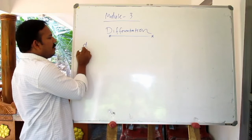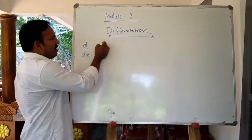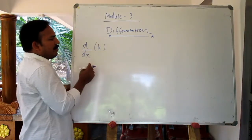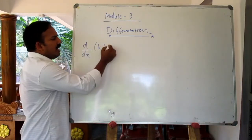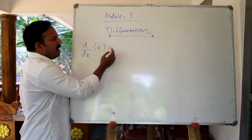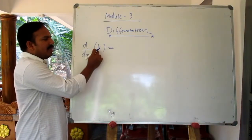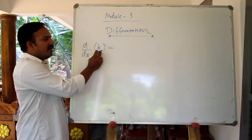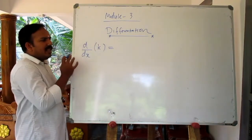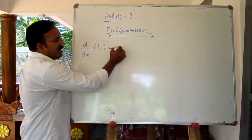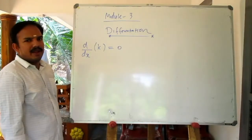The basic title is d by dx. The differentiation we have to denote is d by dx of k, which is a constant function. When we differentiate a constant with respect to x, the answer is 0.